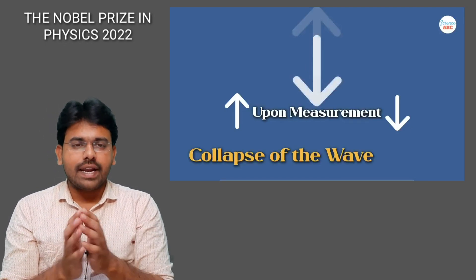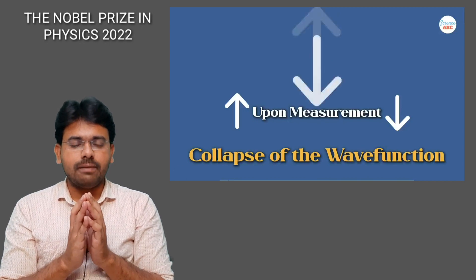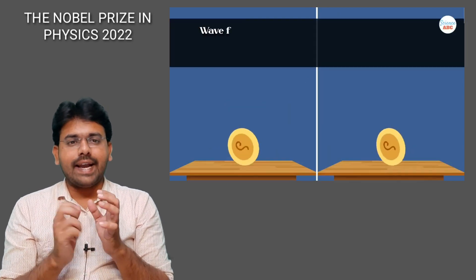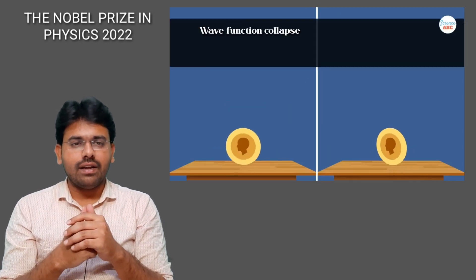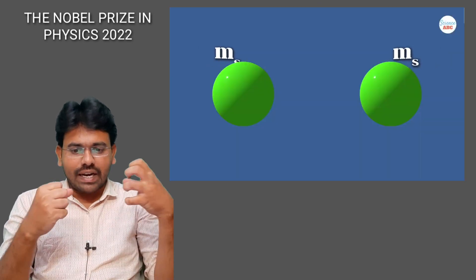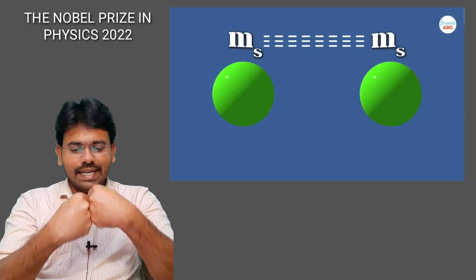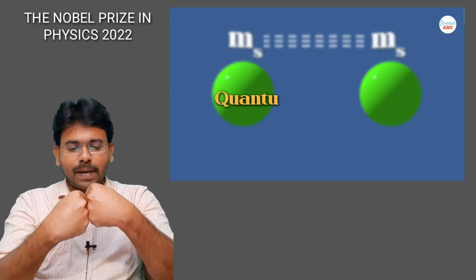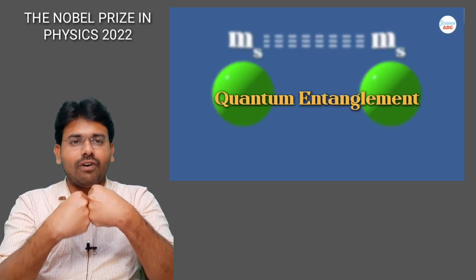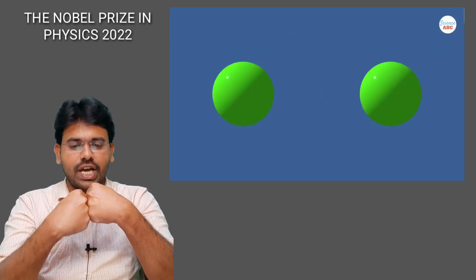Simply put, quantum entanglement means that a pair of electrons will be generated and integrated, so their spatial proximity — their spin states — will be shared between them.